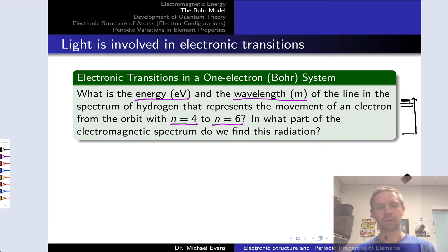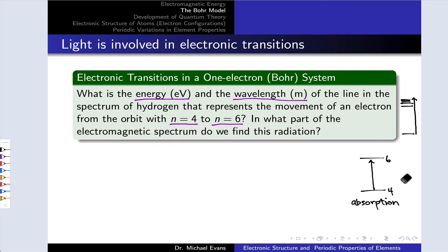In this particular problem, we're interested in the transition from n equals 4 to n equals 6. This is from a lower energy level at n equals 4 to a higher energy level at n equals 6. So a photon is being absorbed. The change in energy is positive is another way to think about this.